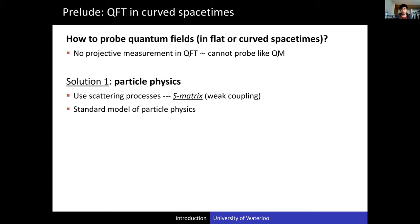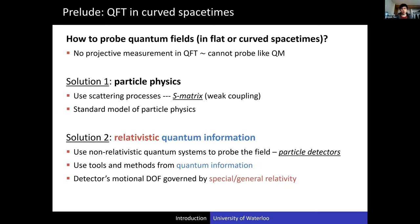On the other hand, if you're in a strong coupling region like when you are doing QCD, you might have to use something else. The solution that people like me are using is what we now call relativistic quantum information. What we mean is that we use a non-relativistic quantum system to probe the field as an intermediate step — we use what we call particle detectors.